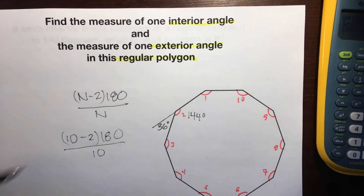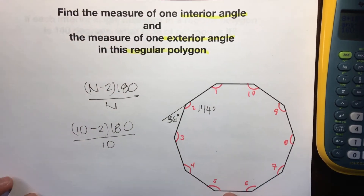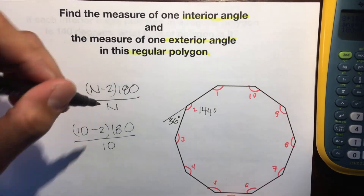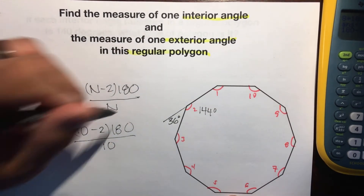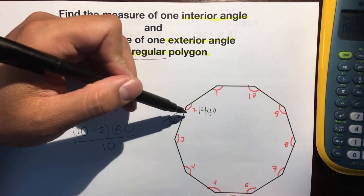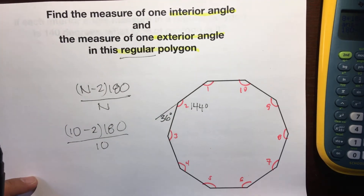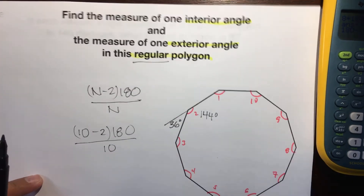Here's our formula: n minus 2 times 180, divided by n. Remember, this only works when the polygon is regular, because all angles have to be exactly the same measure.